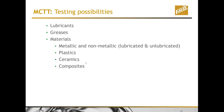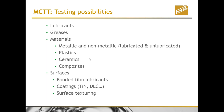Testing possibilities include lubricants, greases, metallic and non-metallic materials — plastics, ceramics, composites — all testable in lubricated and un-lubricated conditions. We can also look at wear rates and friction properties of surfaces with bonded film lubricants, coatings such as titanium nitride and diamond-like carbon, and also surface texturing.